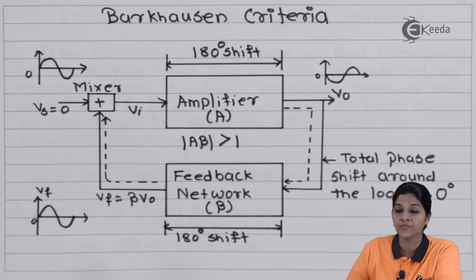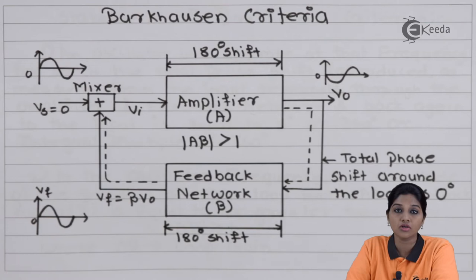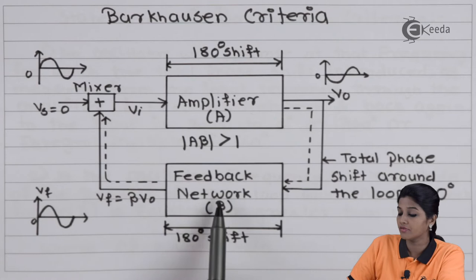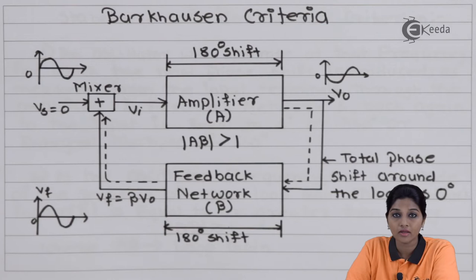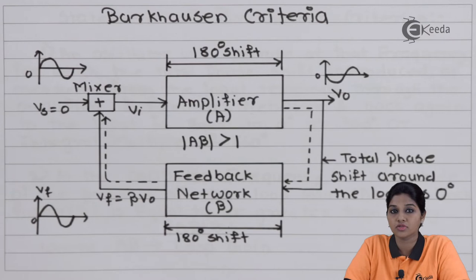V0 acts as the input to the feedback network. The feedback network provides output signal Vf, where Vf equals β times V0. This Vf then acts as the input to the amplifier directly, or it can be applied to the mixer. The mixer does not have any additional external input signal — that means there is no external AC input signal applied to the amplifier circuit.